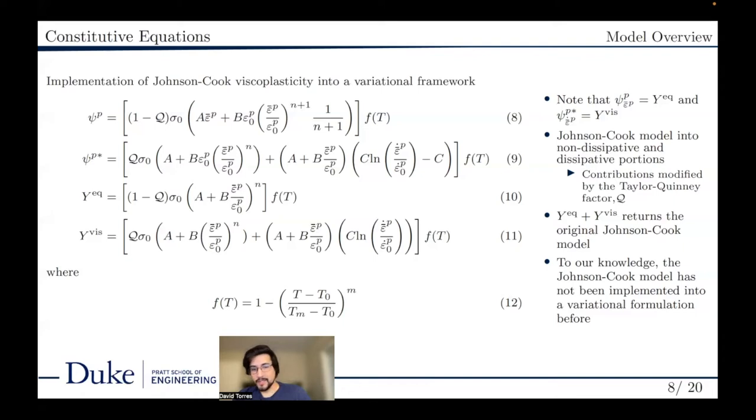Adding the two portions of the dissipative and the energetic portions of the flow stress back together will recover the original Johnson-Cook model. Note that the softening term or the softening function f of t is unchanged through this derivation due to the fact that it is not reliant on the plastic strain or the plastic strain rate.